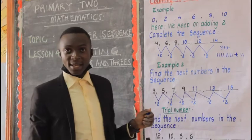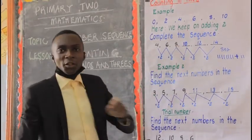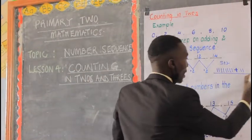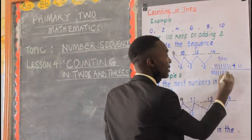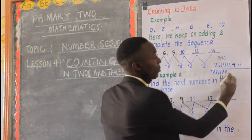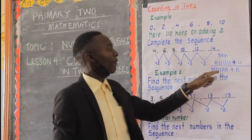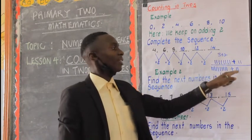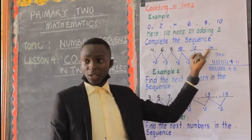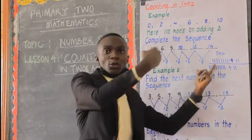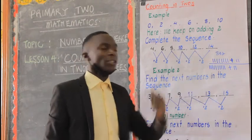Remember, our sequence says we go on adding two. Ten plus two — you do the working also. Count on: eleven, twelve. That's why we write twelve. And because our sequence tells us to keep adding two, you also add two to twelve to get fourteen as the next answer.